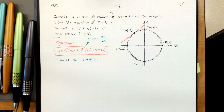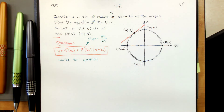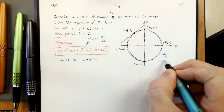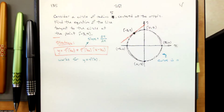We have an obvious problem with this problem as stated: that circle is not a function. That circle cannot be written with y as a function of x. There isn't a workaround — I know a lot of you are already thinking about it: just do the top half, positive square root. But that is a workaround. The problem we run into is that the circle does not represent a function.